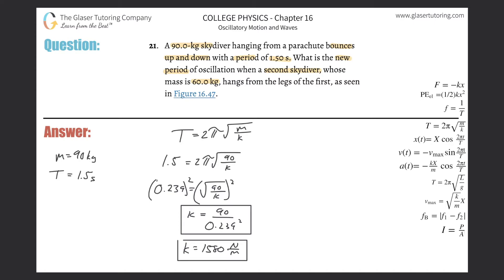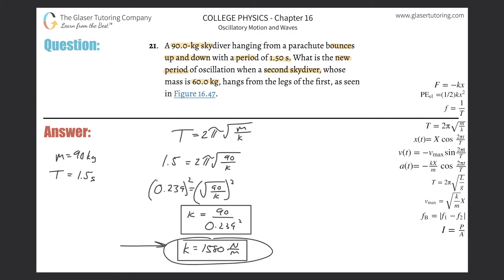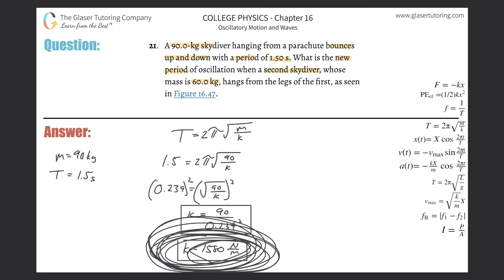How does that help us? The next sentence asks: what is the new period of oscillation when a second skydiver with a mass of 60 kilograms is hanging from the legs of the first? Are they both hanging from the same parachute? The spring constant I found — it's the force constant of the parachute, which has elastic tendencies. If they're using the same parachute, the spring constant remains constant for this problem because it's the same spring.